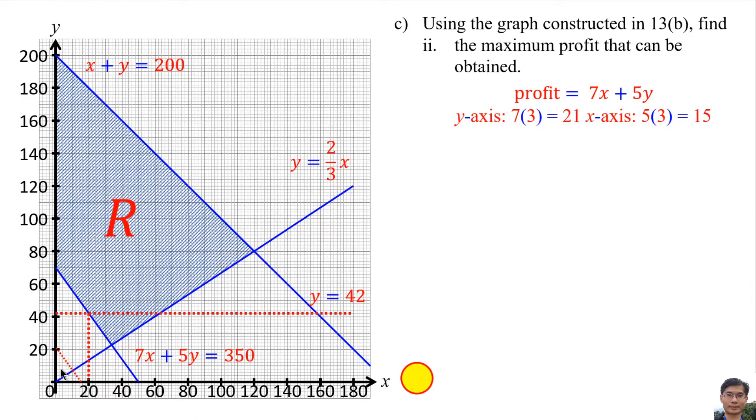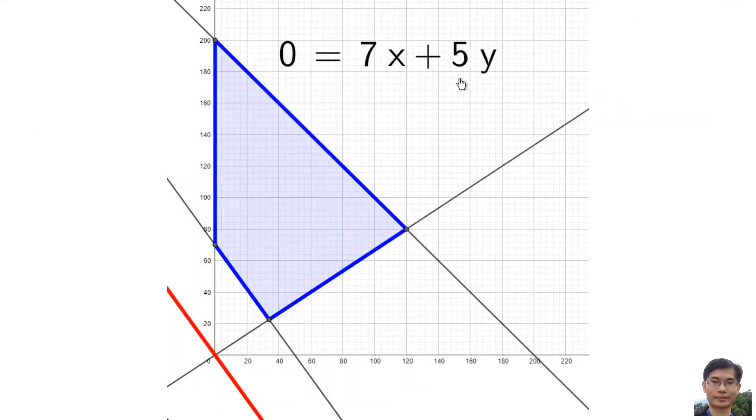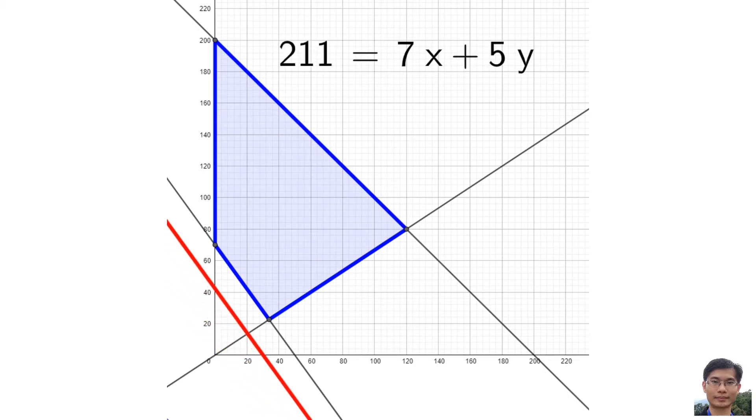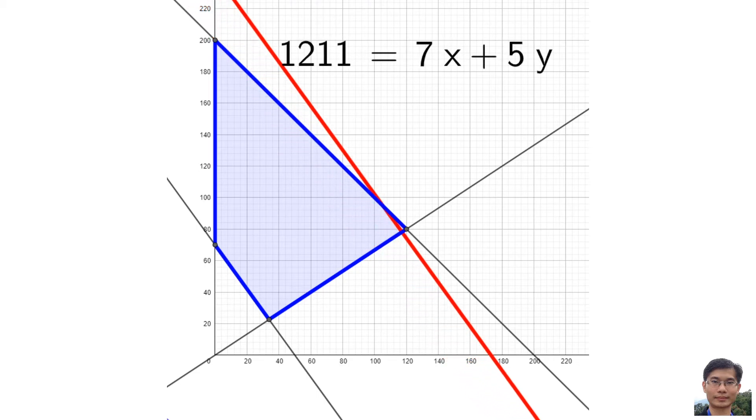So I draw the line and then the line is moved, and then it reaches the furthest points of the shaded region. This is equation of the profit. The maximum profit is 1240.